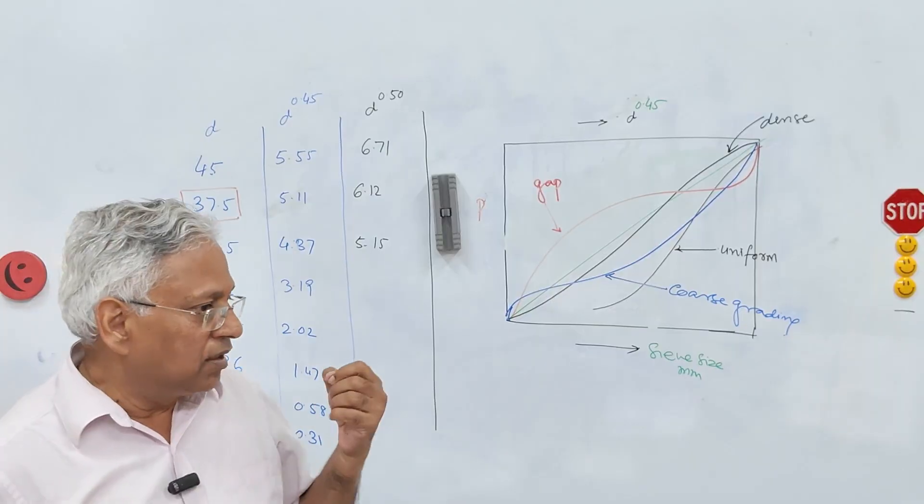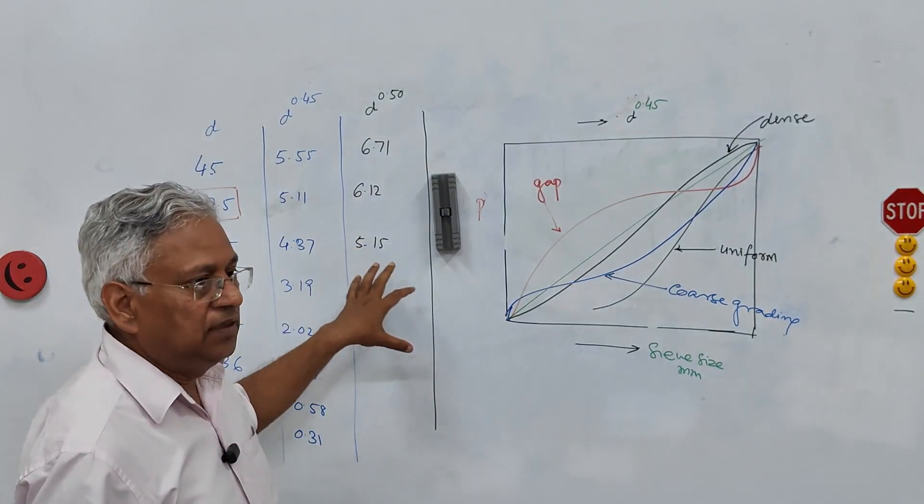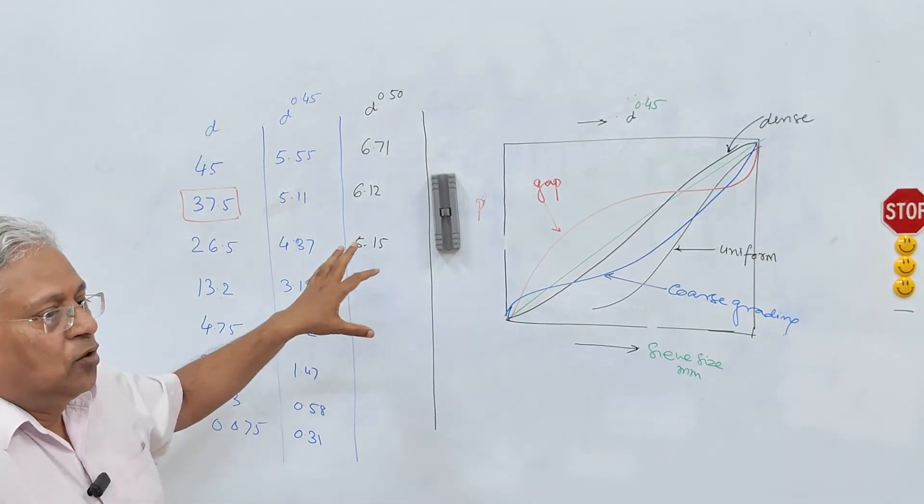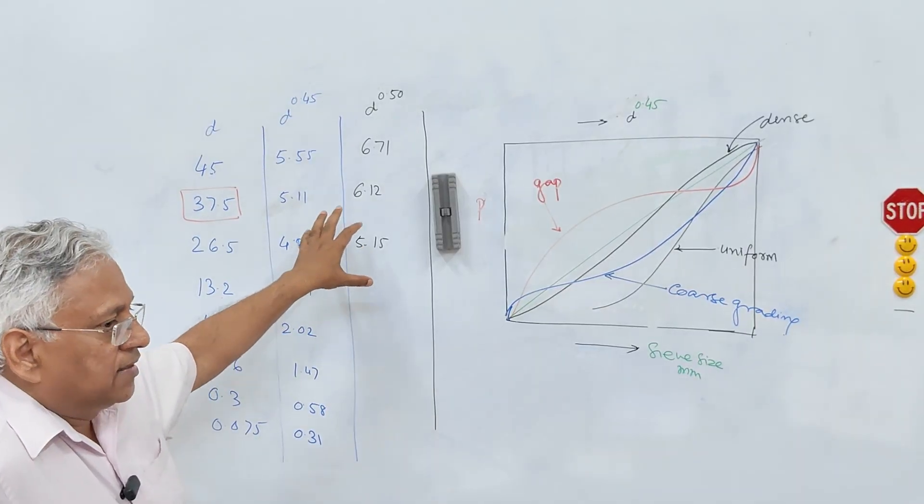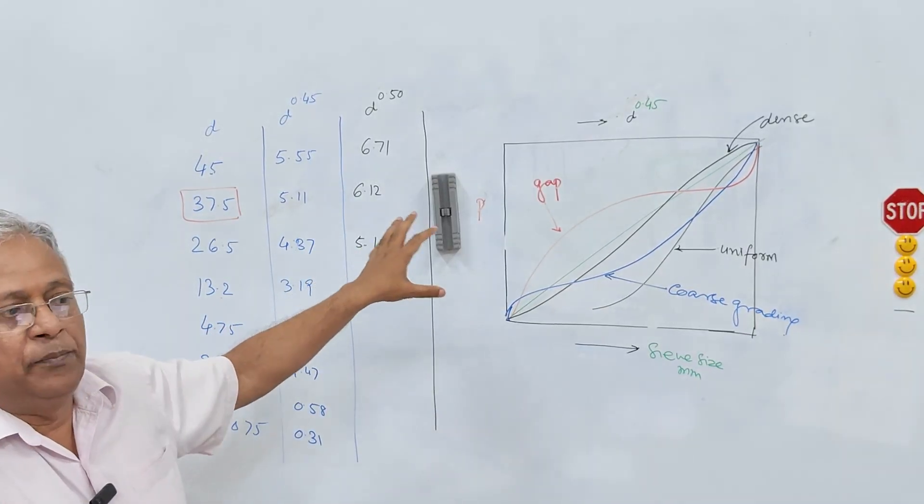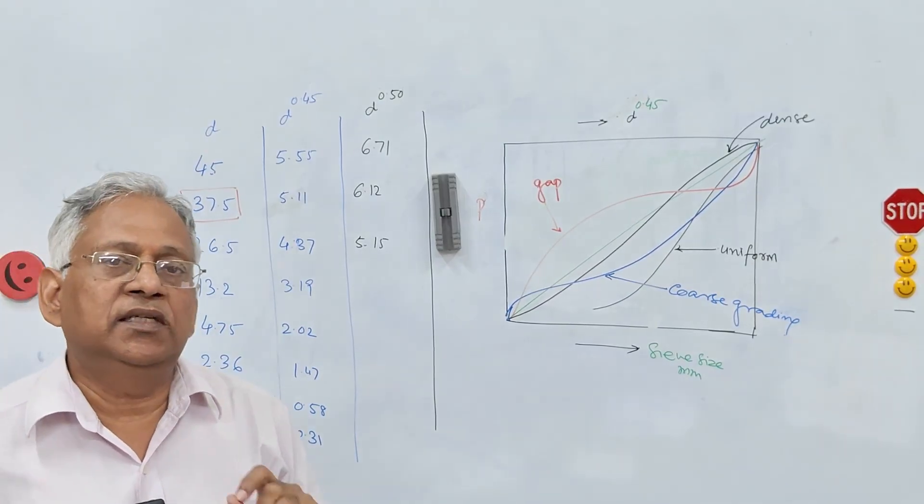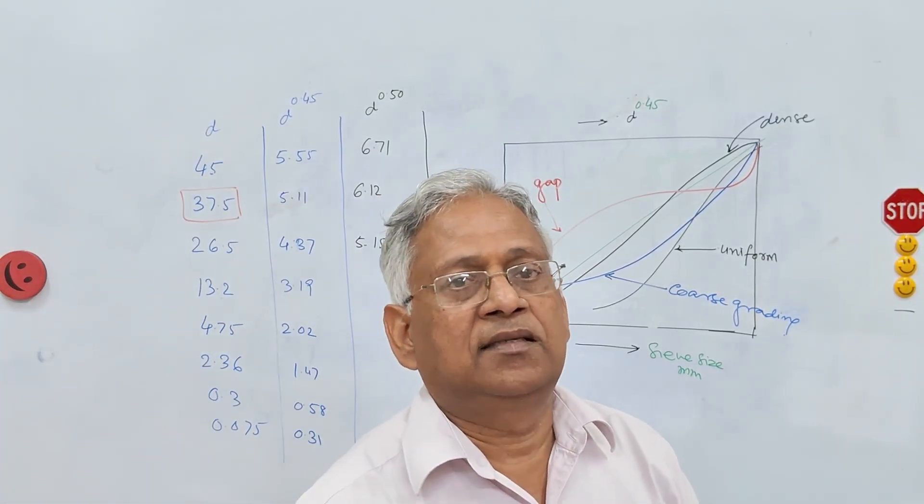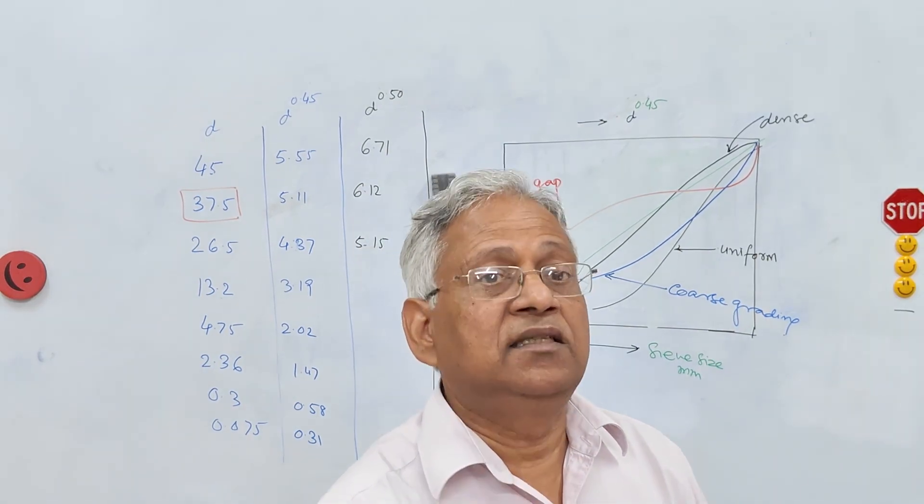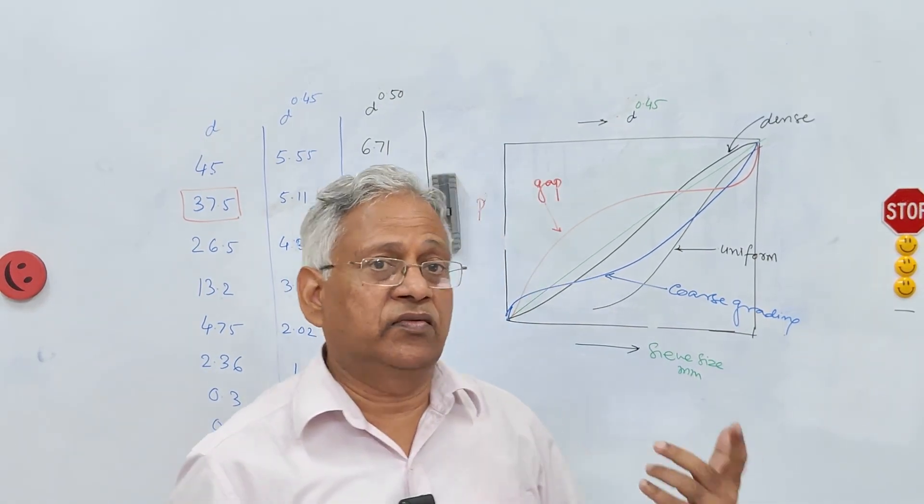While the Fuller curve also aims at the maximum density line, the 0.45 curve provides a more refined approach to achieving maximum density, especially when using a wide range of aggregate sizes in the mix, as is generally the case with asphalt mix design.